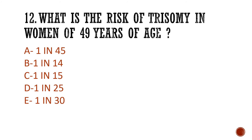Question 12: What is the risk of trisomy in women of 49 years of age? Is it A) 1 in 45, B) 1 in 14, C) 1 in 15, D) 1 in 25, or E) 1 in 30? The answer is 1 in 25.